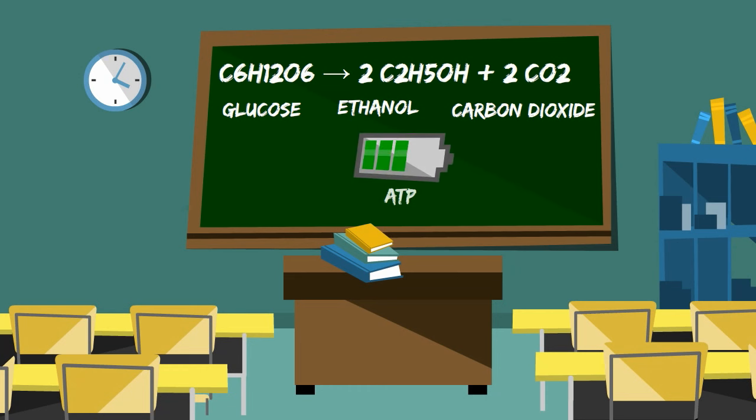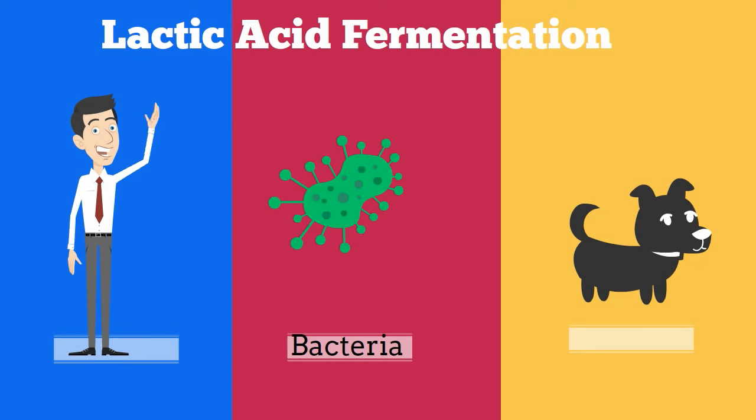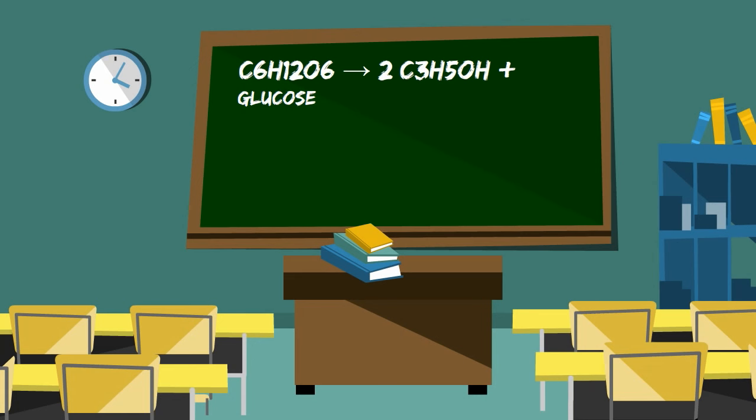This is how many wines and beers are created. The other type occurs in animals, including humans. In this process, the cell takes glucose, again technically pyruvic acid, and it is converted into lactic acid plus energy. This occurs when the cell needs energy and there is just not enough oxygen.